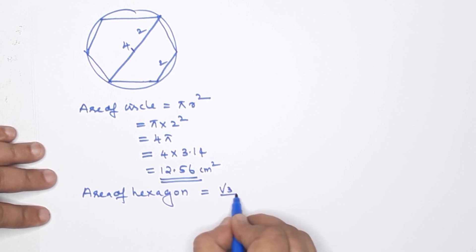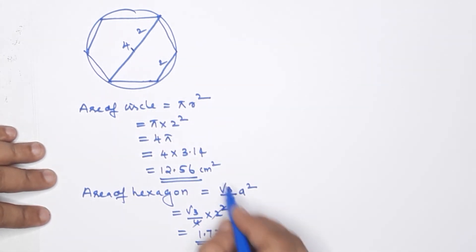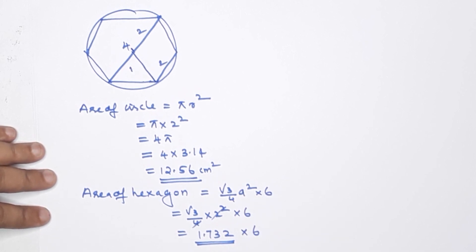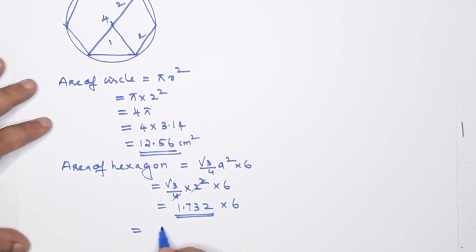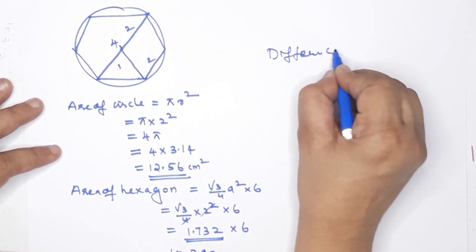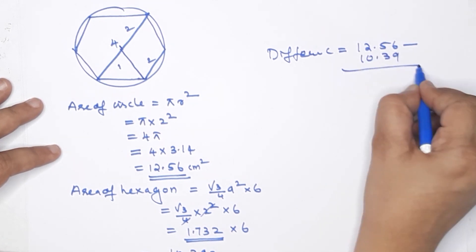The area of a regular hexagon uses the formula (√3/4) × A² × 6, where A = 2. That gives 6 × 1.732 = 10.392. The difference is 12.56 − 10.39 = 2.17.